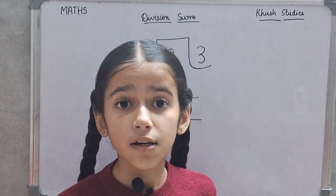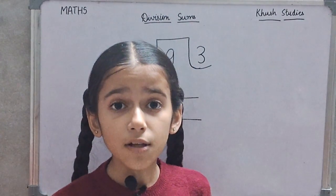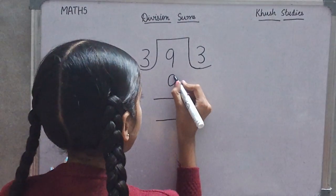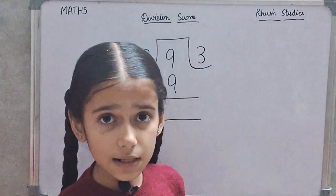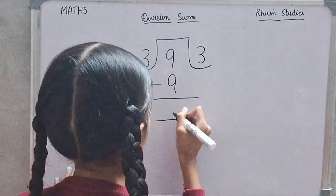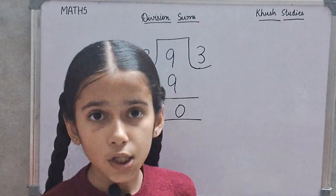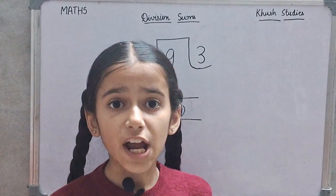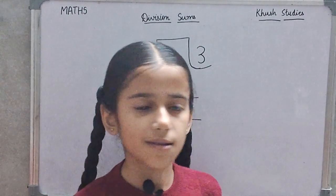In division, we always do subtraction. So, we will write here minus. 9 minus 9 is 0. So, each child will have 3 chocolates.